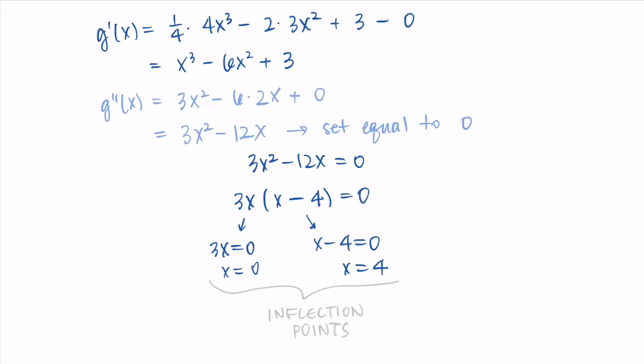Something I should point out: inflection points also occur when the second derivative is undefined. Our second derivative is 3x² minus 12x, which is just a polynomial — it's always defined everywhere, so it has no undefined points. These two values, 0 and 4, are the only inflection points. At the end of this video I'll show a case where we do need to look at undefined places.